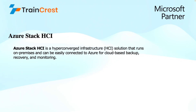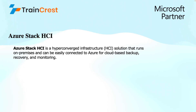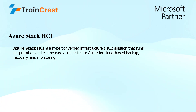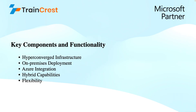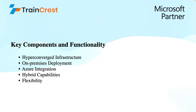Once we complete deployment of the HCI operating system in this tutorial, we will also explore what roles, features, and packages are available. The key components and functionality of the HCI operating system are: number one, hyper-converged infrastructure, which combines compute, storage, and network resources into a single integrated platform. Number two, on-premises deployment — it can be deployed in data centers or edge locations.